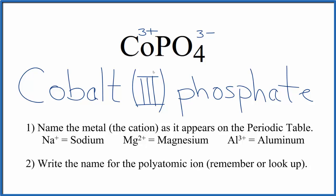So the name for CoPO4 is cobalt 3 phosphate. And the 3, that comes from the 3 plus here on the cobalt. This is Dr. B, and thanks for watching.